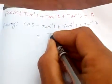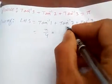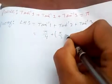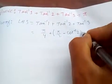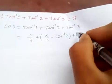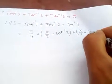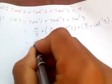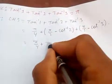We know arctan(1) = π/4. And arctan(2), in terms of arccot, is π/2 − arccot(2). Similarly, arctan(3) is π/2 − arccot(3). So we have π/4, and these two π/2 terms add up to π.